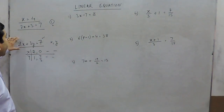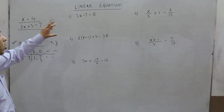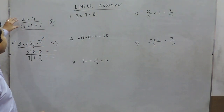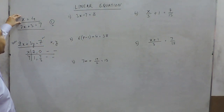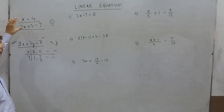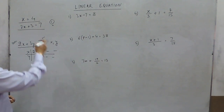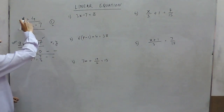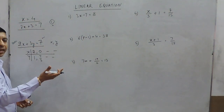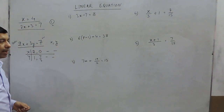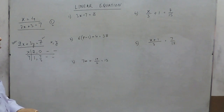The equation 2x plus 3y equals 7 is known as a linear equation in two variables. But an equation with a single variable — whether that variable is x, t, p, or any other letter — is a linear equation in one variable.